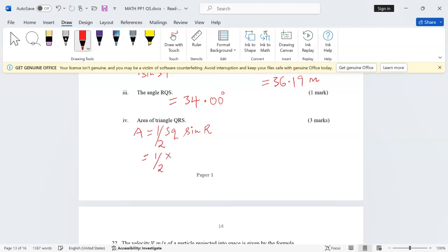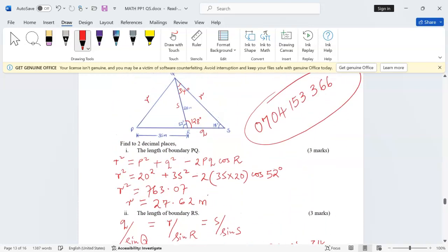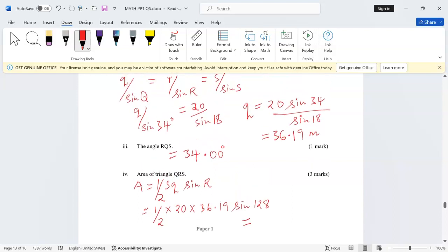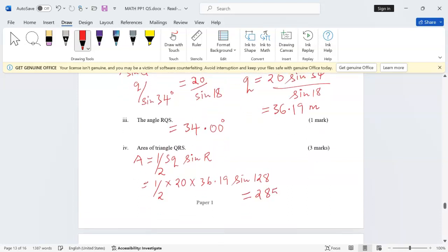When we compute this, 0.5 times 20 times 36.19 times the sine of 128, I'm going to get 285.19 square meters.